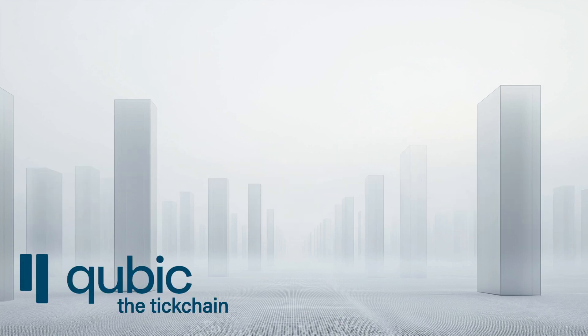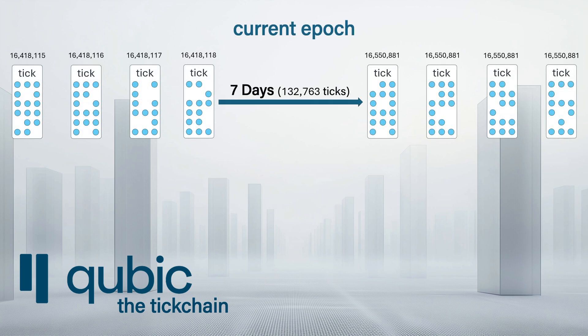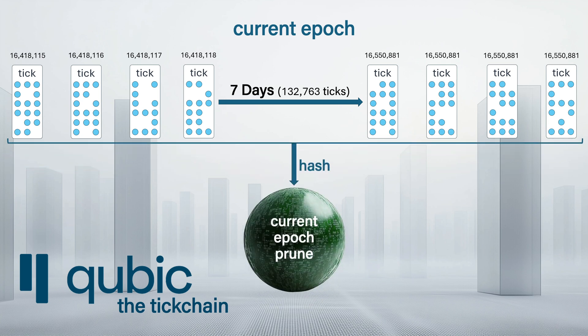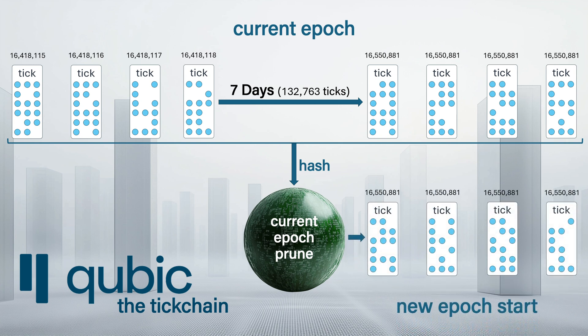Let's look closer at this process. All the transactions from the previous epoch are pruned with the use of Merkle trees, and only the summary of wallet balances is left after this process. This ensures that all the previous epochs have been verified and the previous wallet balance history is true, although it cannot be tracked back on-chain. After this process, the new epoch starts.